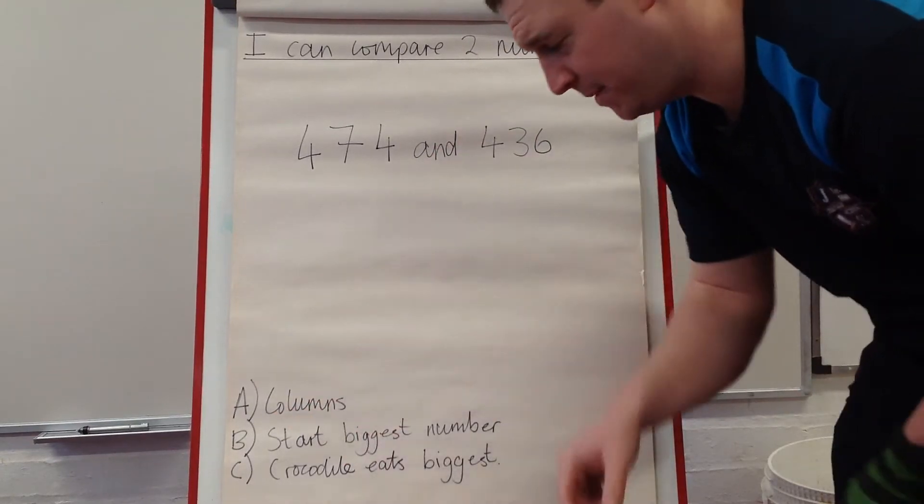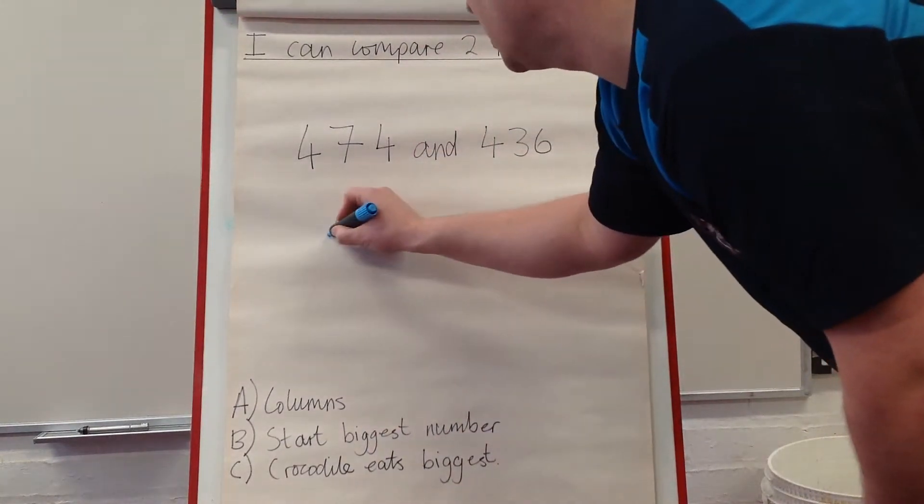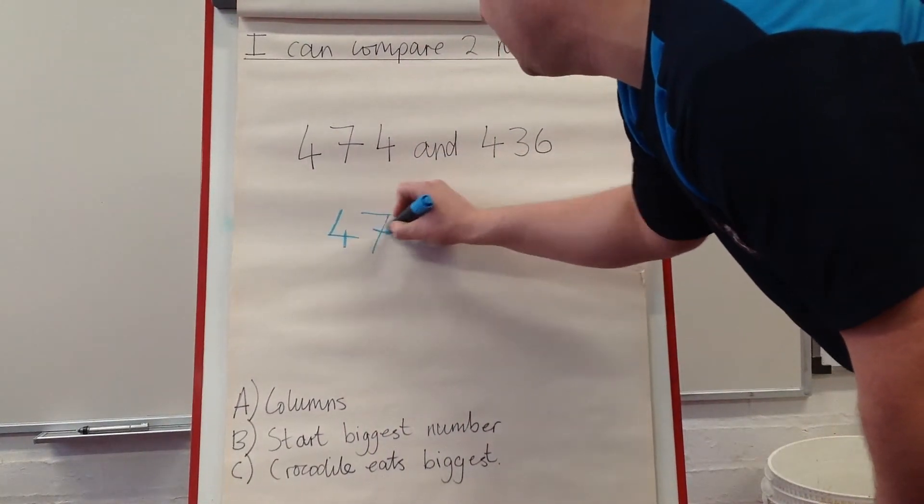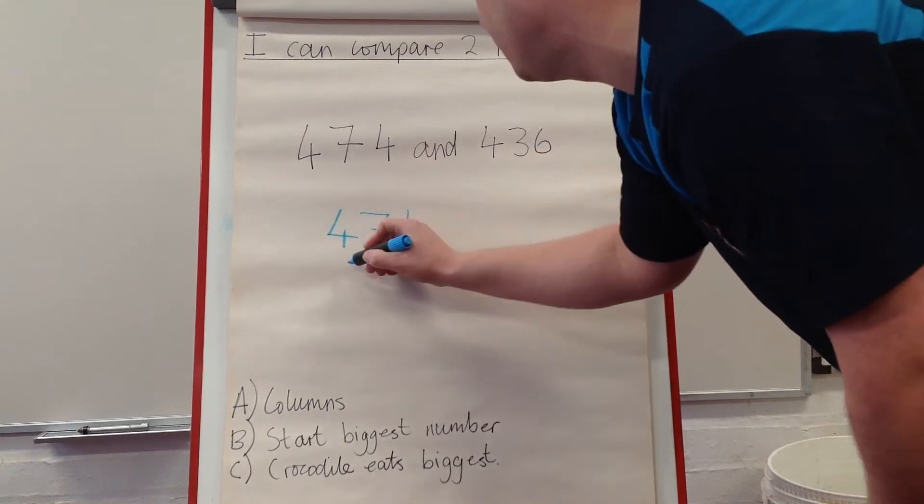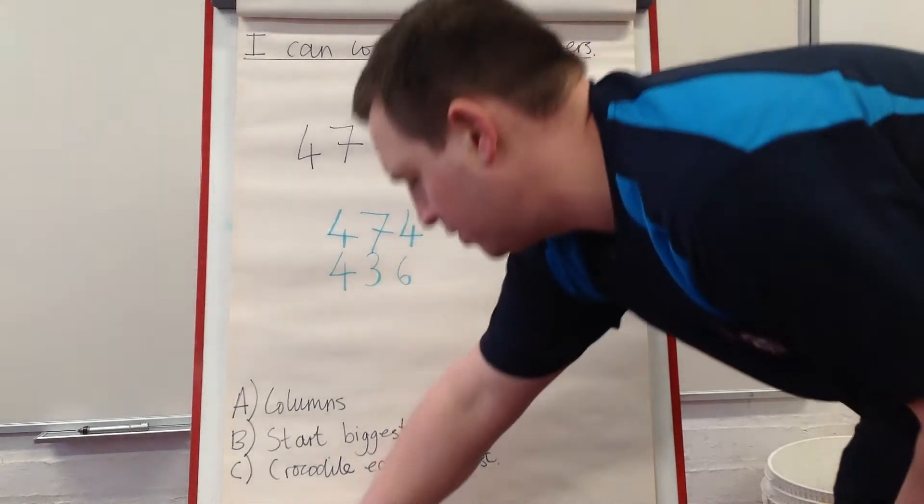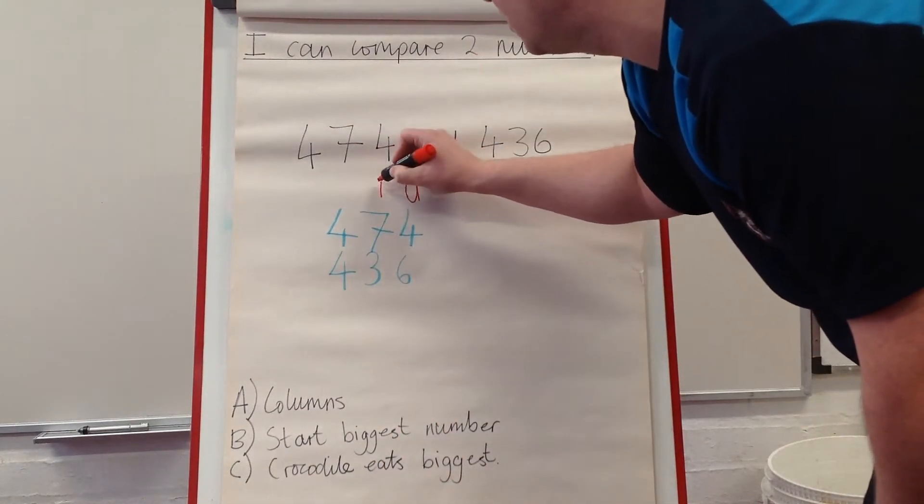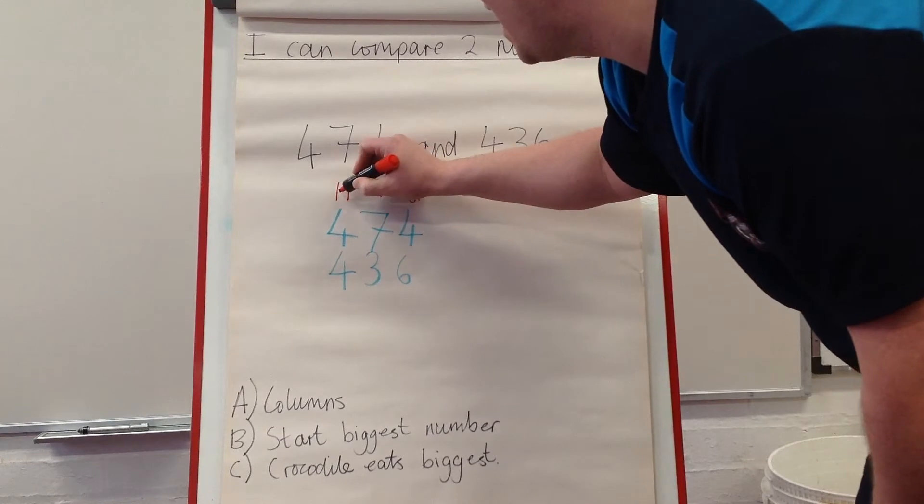First, put them in columns. 474 and 436. Put the columns on the top, units at the end, tens and hundreds.